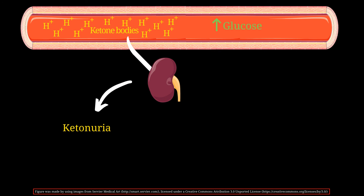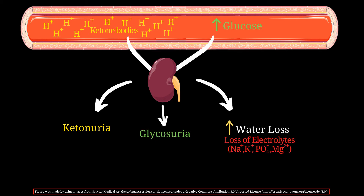Ketone bodies also get filtered by the kidneys and can be detected as ketonuria. The kidneys filter high glucose as well, causing glycosuria. Water follows glucose into the urine since glucose is osmotically active, increasing the loss of water and electrolytes such as sodium, potassium, phosphate, and magnesium. As a result, the patient becomes dehydrated.